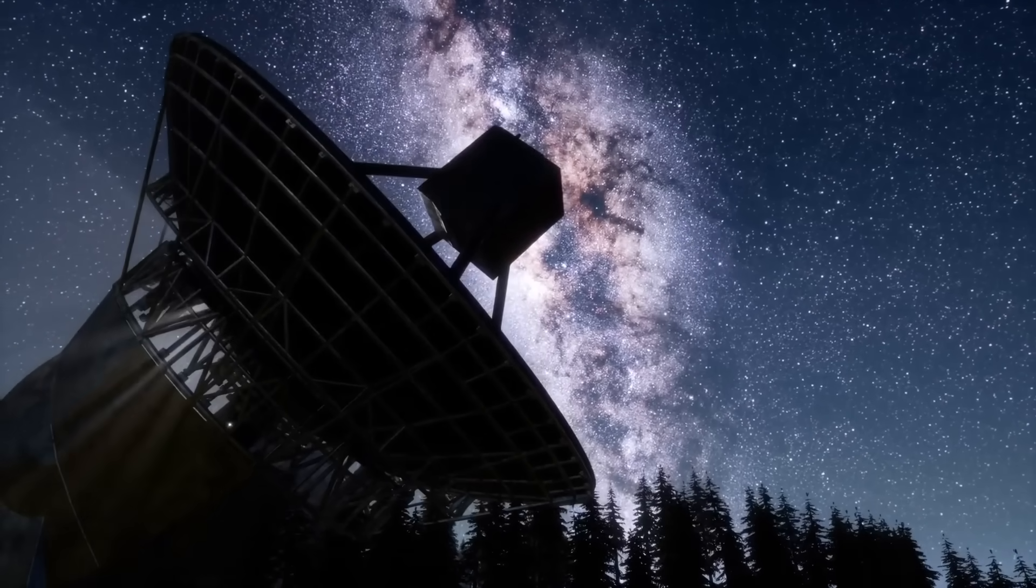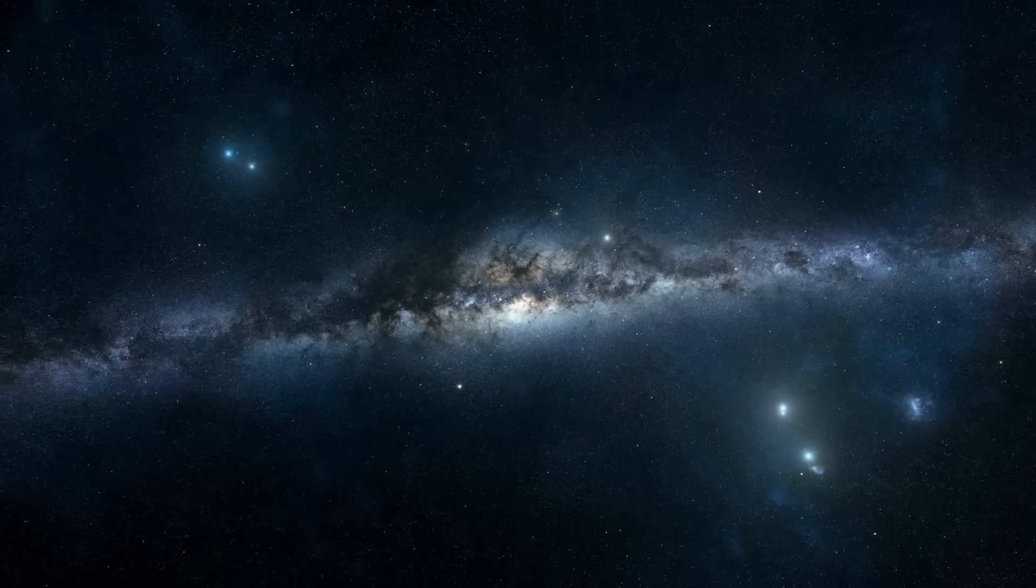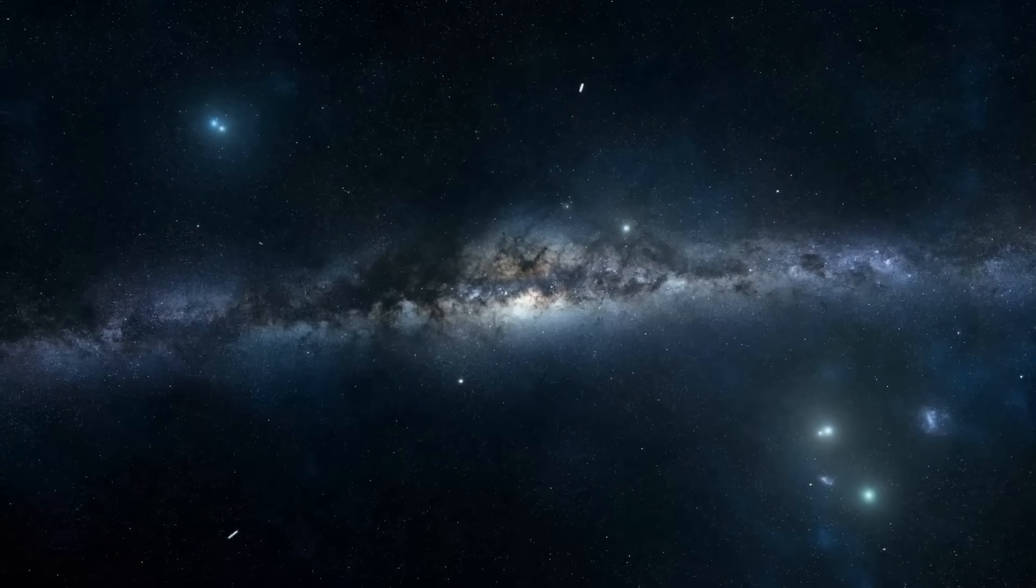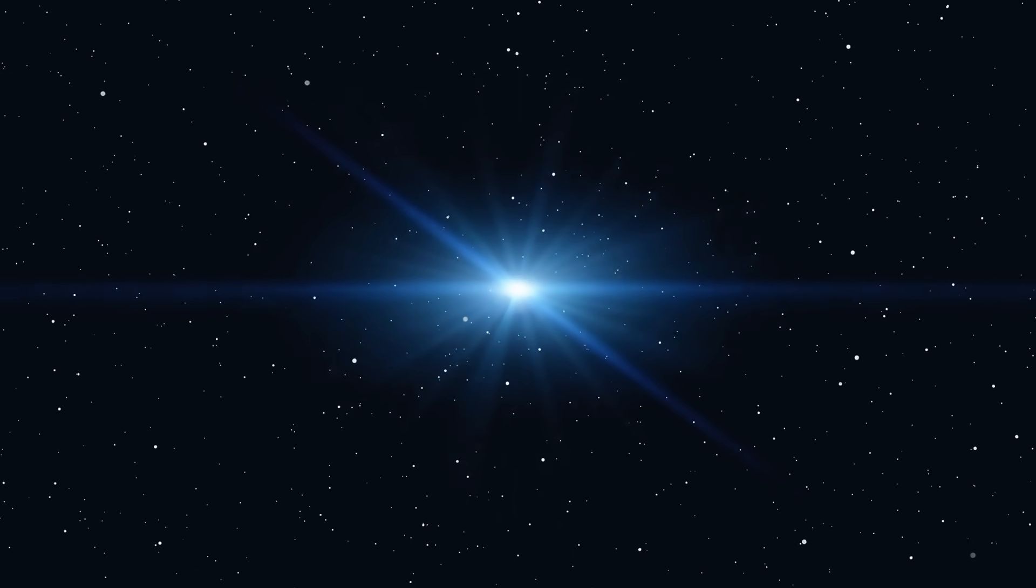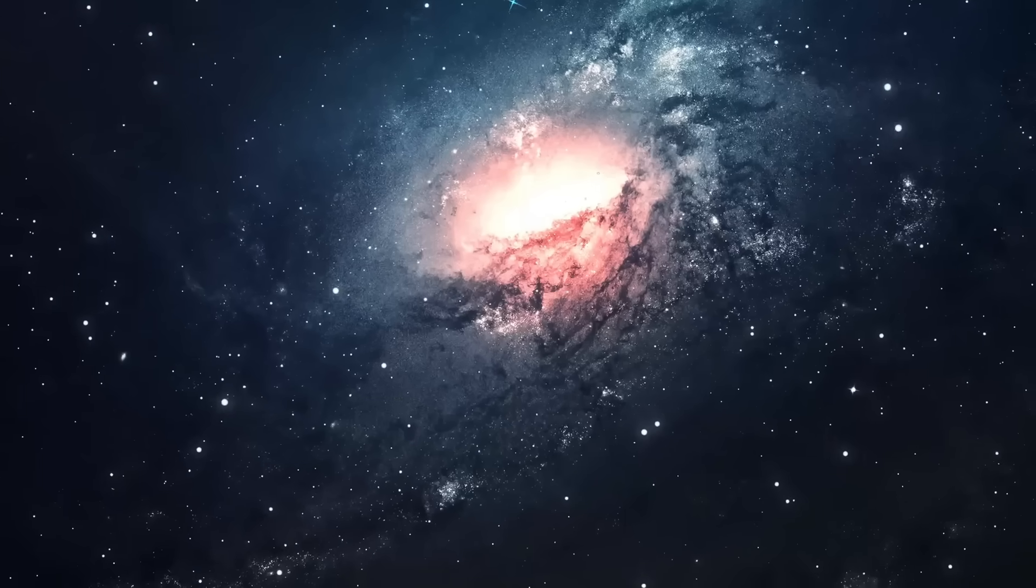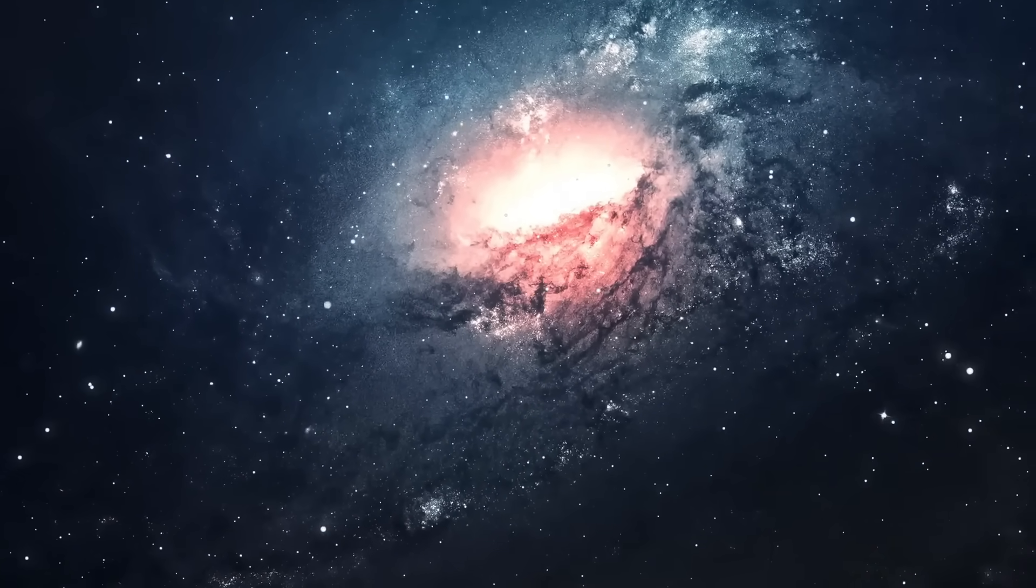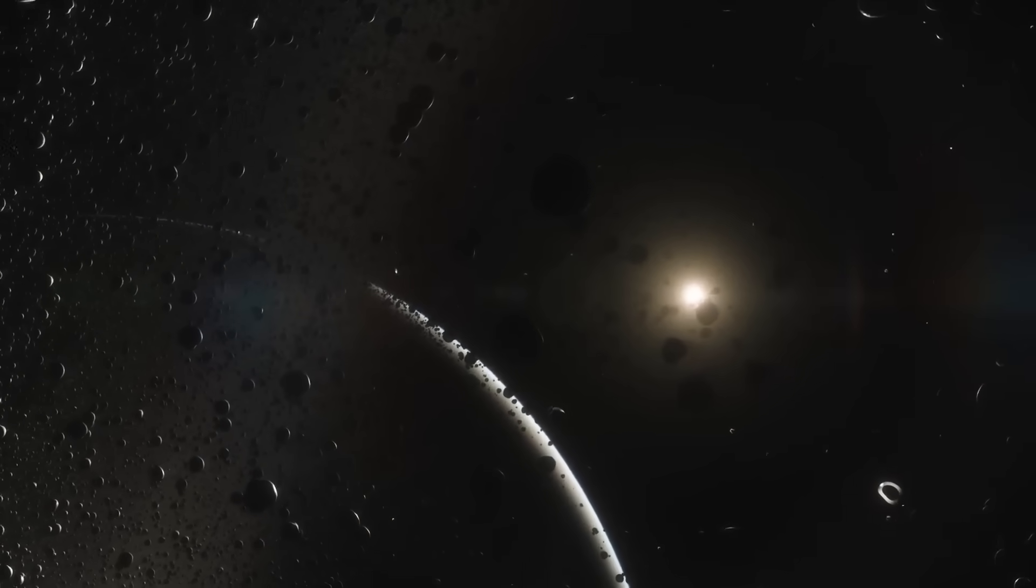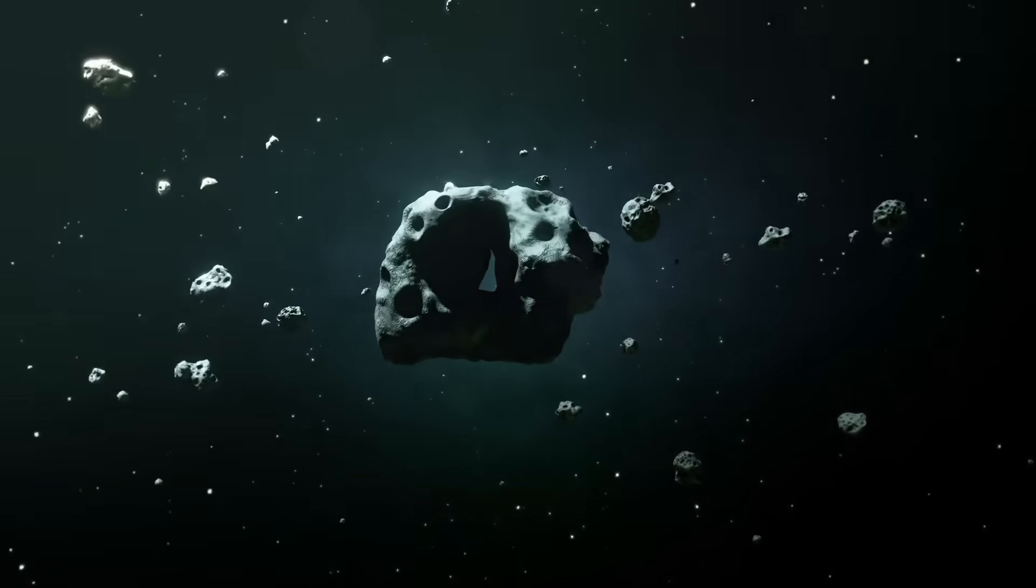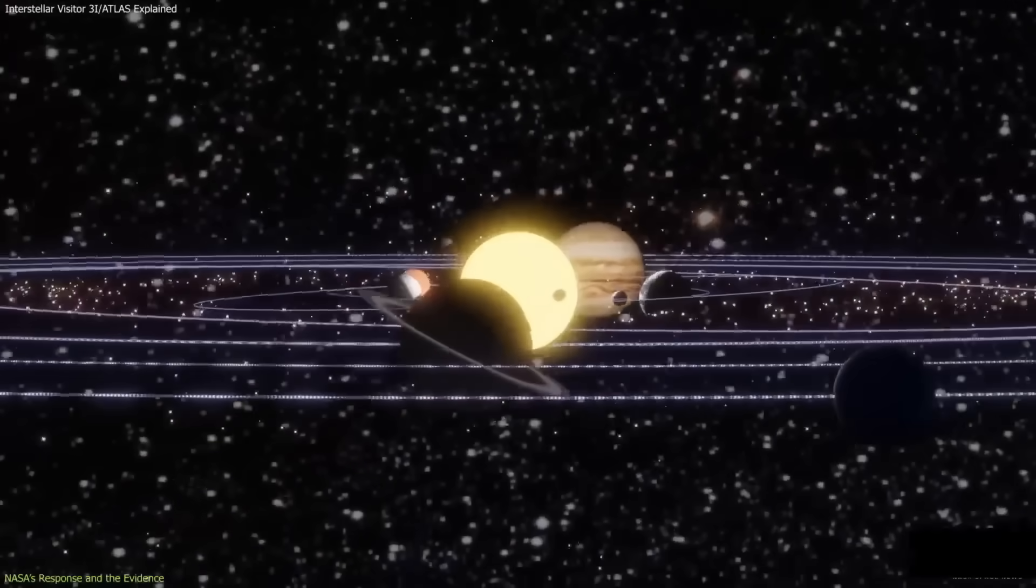The implications extend far beyond astronomy. If 3i Atlas truly hails from the Milky Way's thick disk, as its peculiar velocity and chemistry imply, then we're studying a relic from an older chapter of the galaxy, forged when metallicities were lower and radiation environments harsher. That would make it potentially billions of years senior to our own solar system. A traveler like this could have coasted through interstellar night since before Earth had oceans, its surface gardened by cosmic rays.